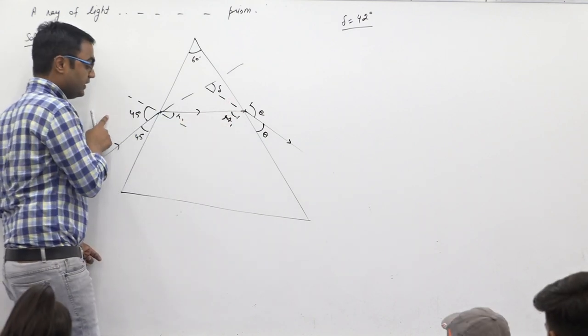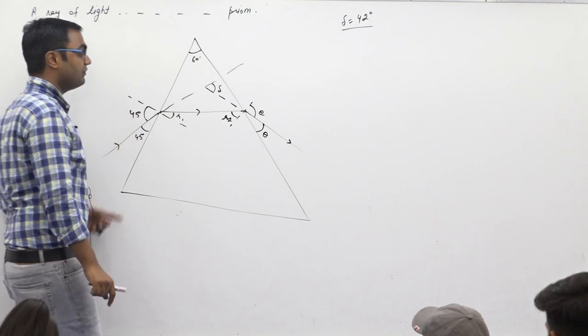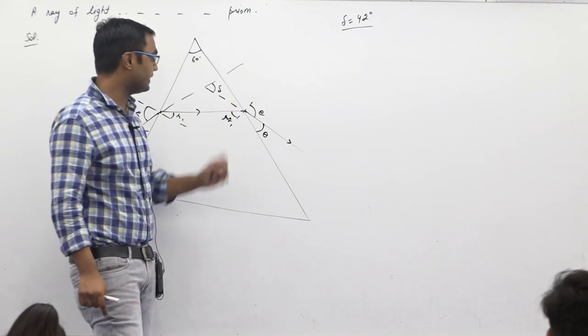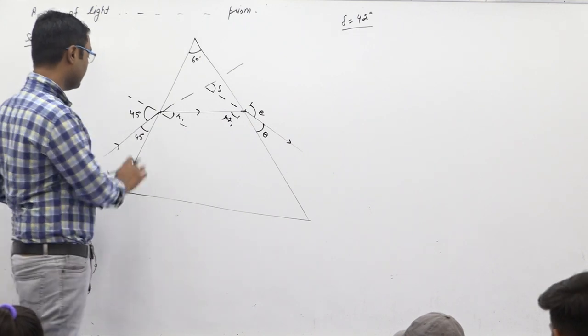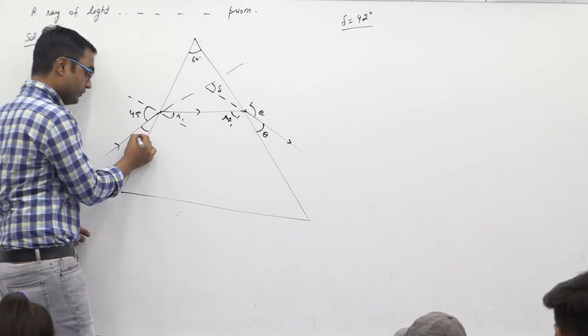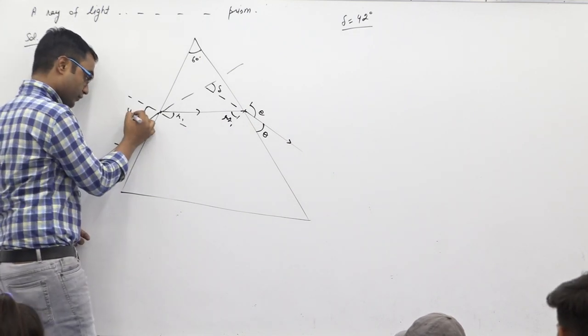The angle of incidence is 45 degrees. The first angle of refraction will be 0, then it will be minus 90. It will be 50. How much is it here? It is 40 degrees.